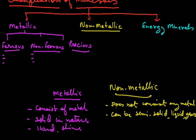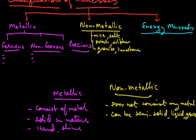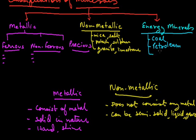Non-metallic minerals: examples include mica, salt, potash, sulfur, granite, limestone, marble, sandstone, etc. So this is how we classify minerals on the basis of metallic and non-metallic. The third part is energy minerals. Energy minerals are classified into three states: solid — coal; liquid — petroleum; and gas — natural gas.